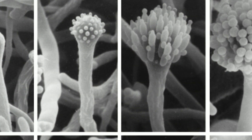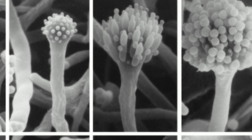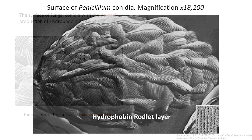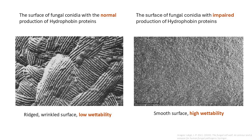Secretion of hydrophobins peaks during sporulation, forming a protective coat around newly produced spores. One of the most striking features of hydrophobin-covered spores is the rodlet layer, which forms through the self-assembly of class 1 hydrophobins into highly ordered amyloid-like fibrillar structures. This layer gives spores a characteristic wrinkled or rigid appearance under electron microscopy and enhances their hydrophobicity, distinguishing them from hydrophobin-deficient mutants, which have a smooth, hydrophilic spore surface due to the absence of these fibrillar structures.